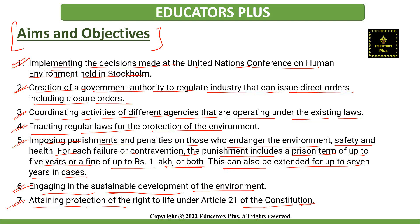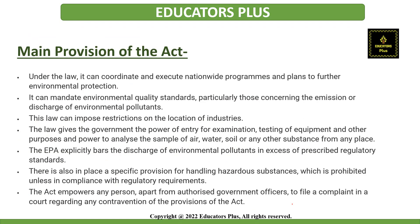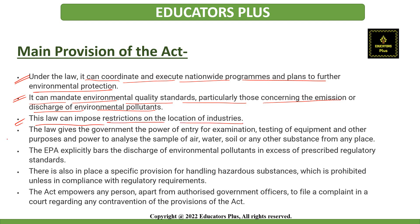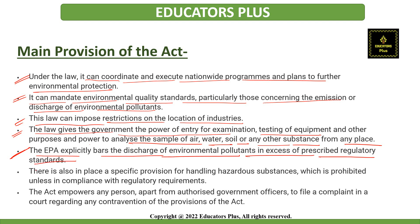The main provisions of the Environment Protection Act: it empowers the central government to coordinate and execute nationwide programs and plans for environmental protection; mandate environmental quality standards, particularly those concerning the emission or discharge of environmental pollutants; and impose restrictions on the location of industries. The law also gives the government the power of entry for examination, testing of equipment, and power to analyze samples of air, water, soil or any other substance from any place. The Act explicitly bars the discharge of environmental pollutants in excess of prescribed regulatory standards.